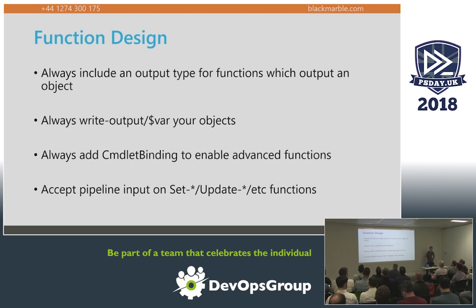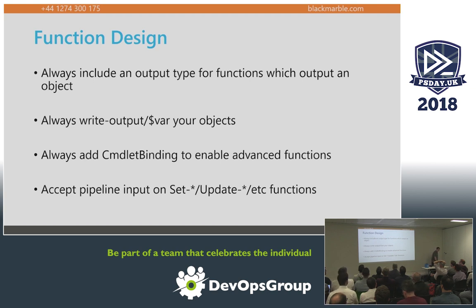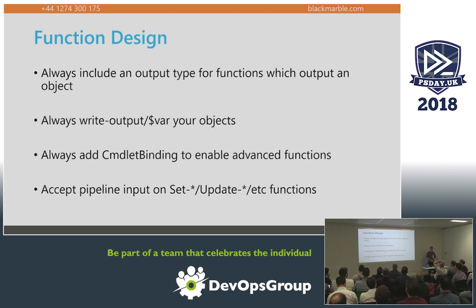So: function design. I assume we're all writing functions to some greater or lesser extent. Functions should only do one thing and do it really well — hopefully we all already know that. Key takeaway: always include an output type. It's not hugely necessary, but it's one less warning from script analyzer, and it makes it easier for things like Get-Help to tell you what you're going to get back.